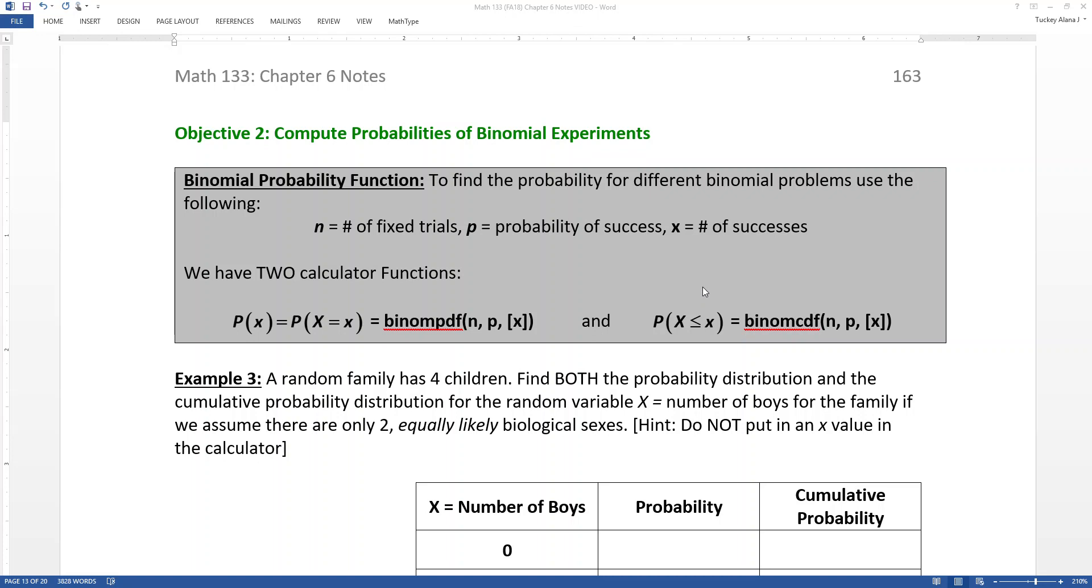Now that we understand the properties of the binomial probability distribution and we know how to recognize it when we see it—namely the fixed trials, the consistent probability of success—we want to be able to find those probabilities. To do that, we're going to use our calculator two different ways.